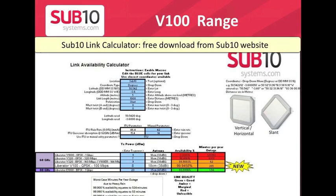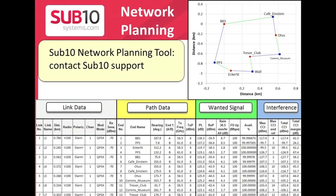This slide shows a screenshot from the Sub-10 link calculator, which is a free download from the Sub-10 website in the support and downloads section. You simply type in the latitude, longitude and length of your link, and you should always select slant polarisation for the V100. Near the bottom of the screen you will see the percentage availability for the particular product, with V100 listed there.